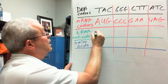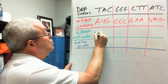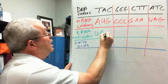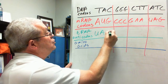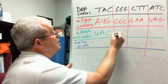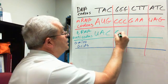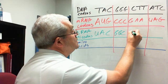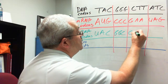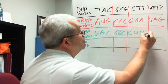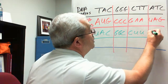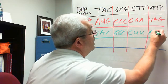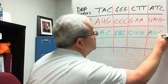So the anticodons would be: A, U, U, A, G, C. And then G, G, G, C, U, U. And then U, A, A, U, G, C.